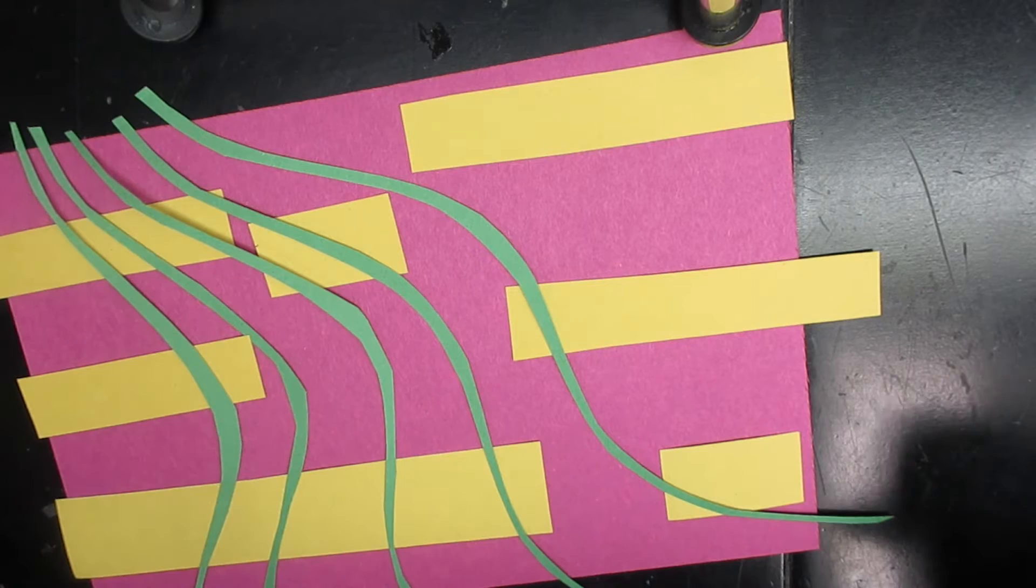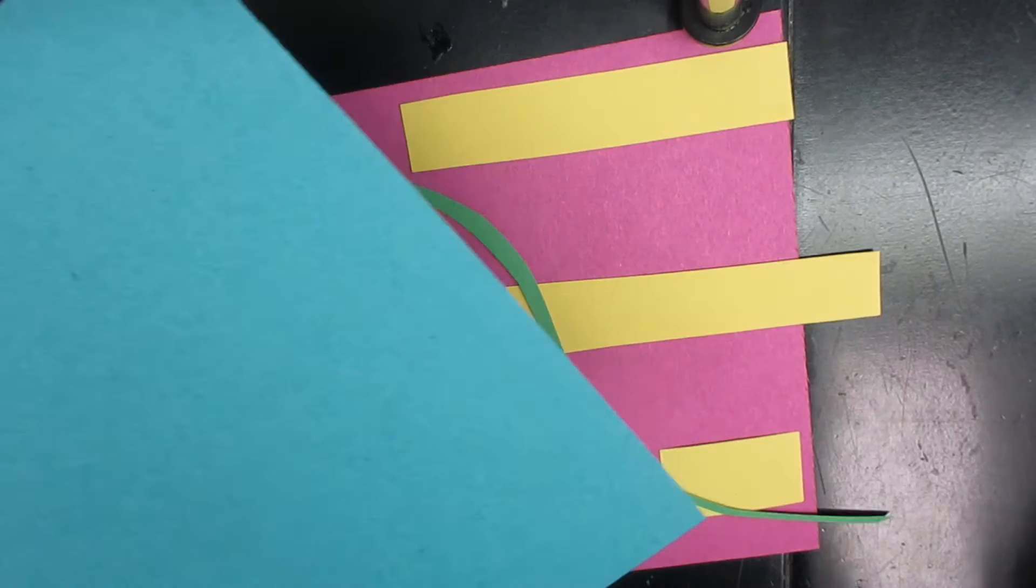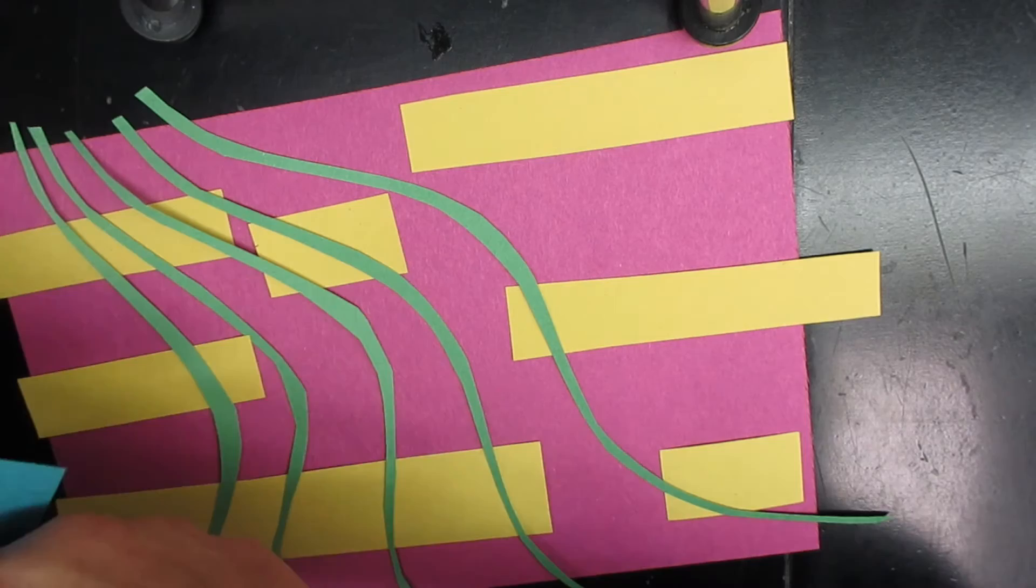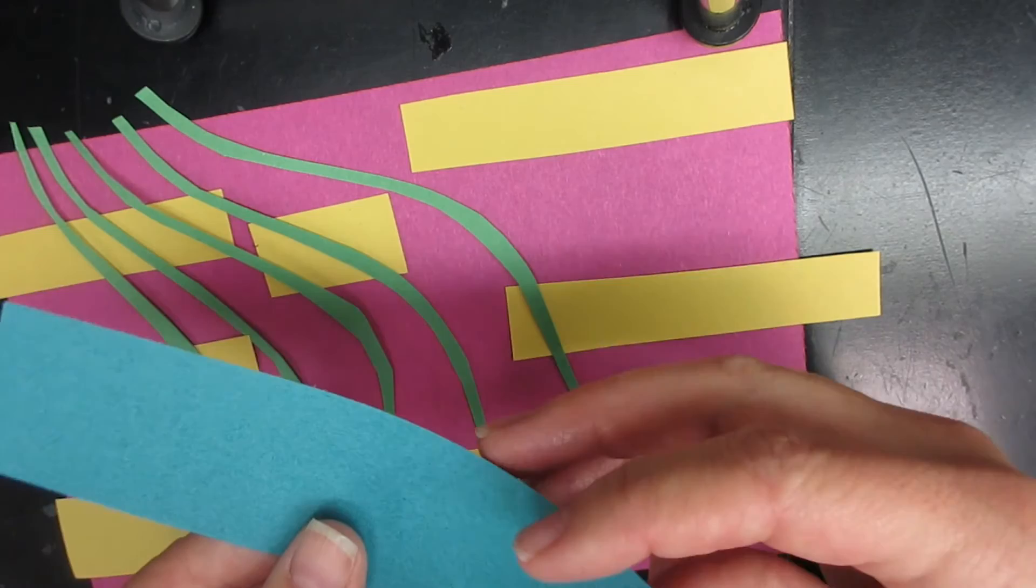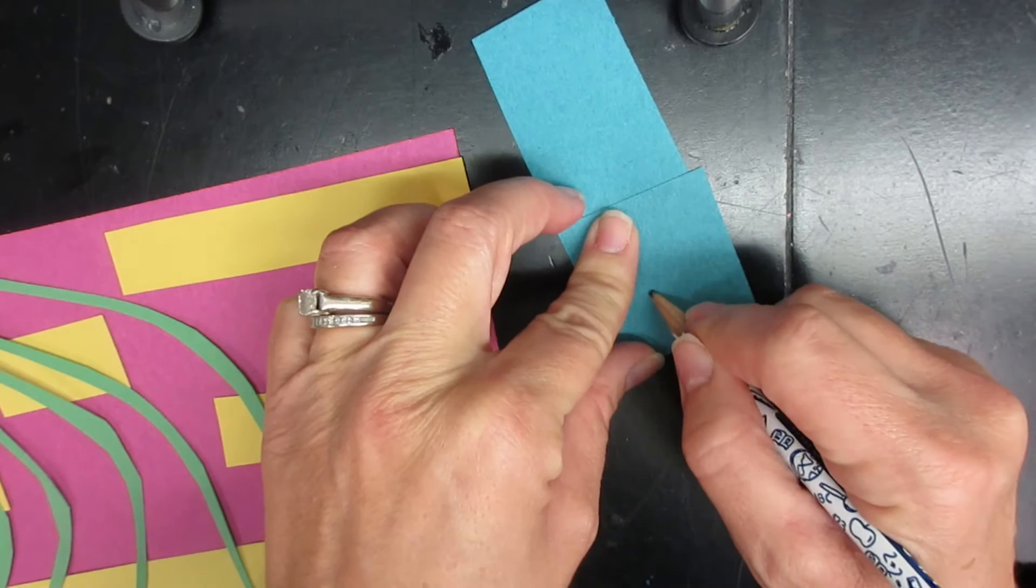So the next thing I want to think about are maybe some music notes. I think those would still be in my background area. First thing I want to do is decide what color paper I'm going to add them in. I think I'm going to use my blue paper. I think that would give me lots of contrast from the warm colors that are in the background. I think I want to cut out more than one music note at a time so I'm going to fold my paper over. This may be something where you want to draw it first and then cut it out.